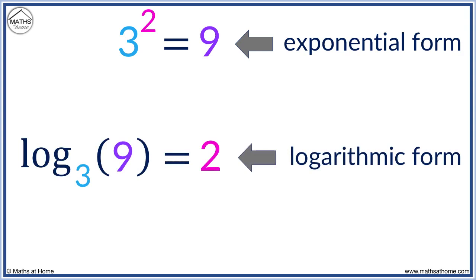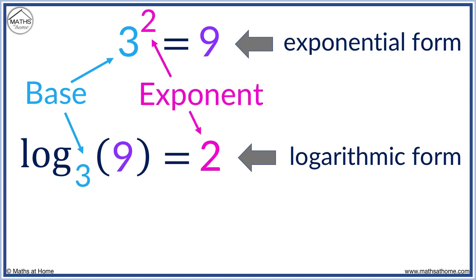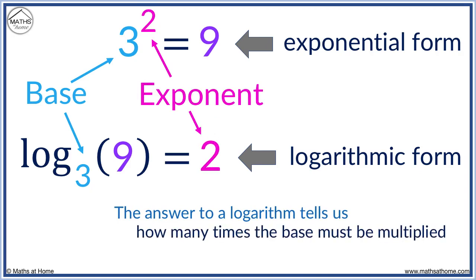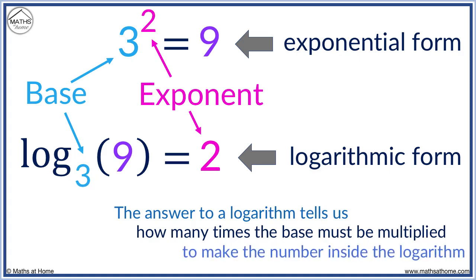Logarithmic form is just a different way of writing it. The 3 is known as the base. On a logarithm, the base is the first number written smaller and below the others. The 2 is the exponent. The answer to a logarithm tells us how many times the base number must be multiplied to make the number inside the logarithm.